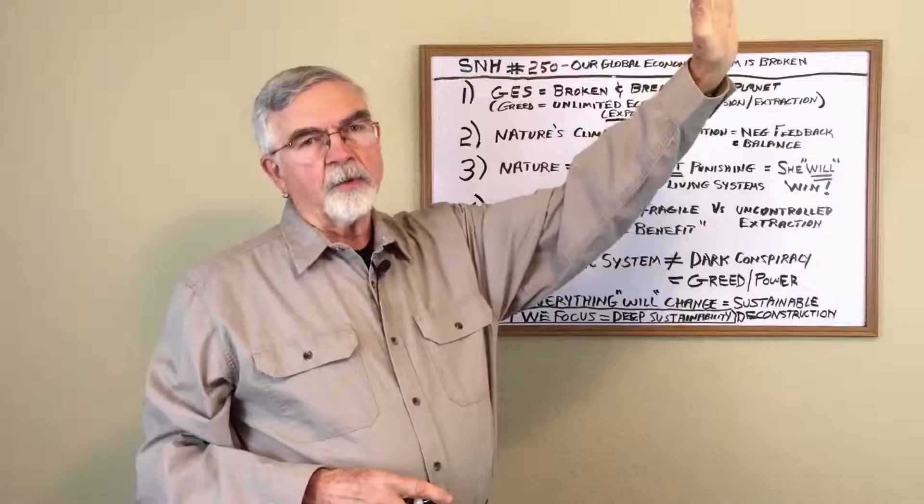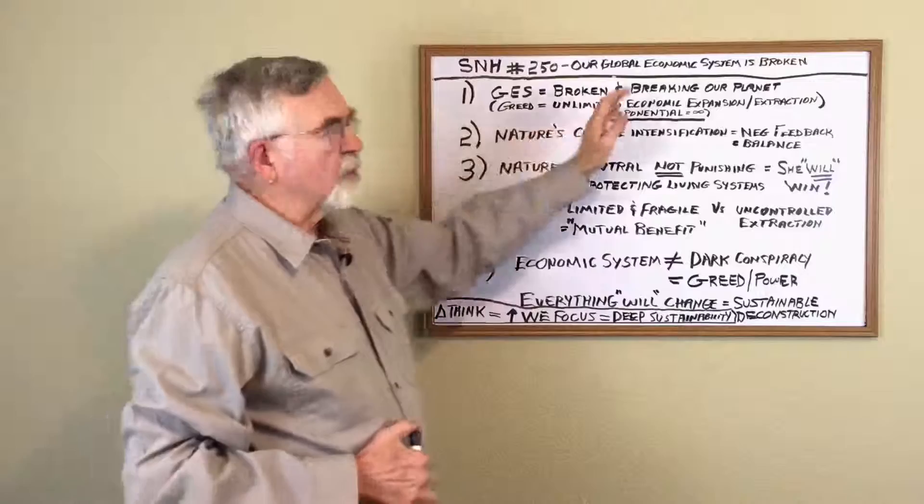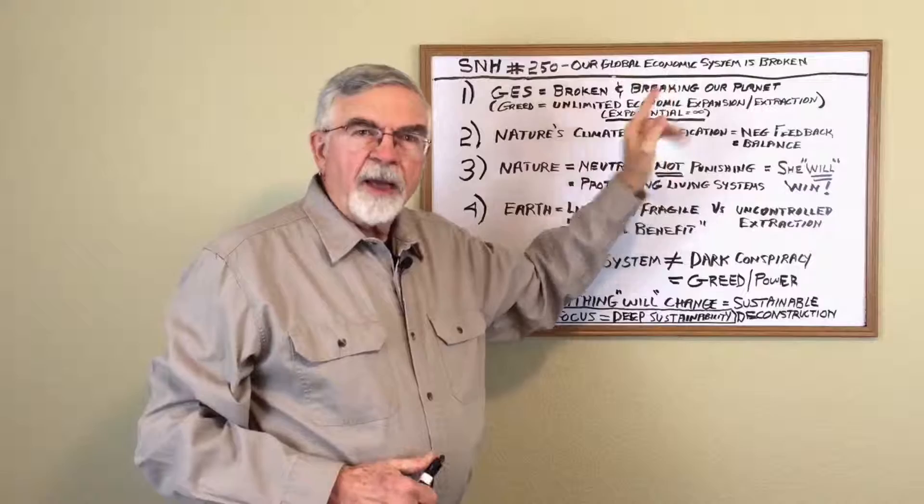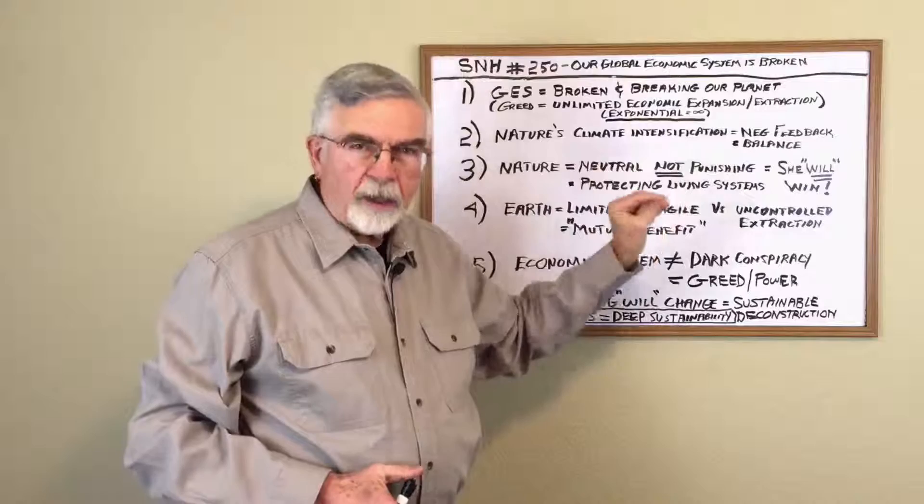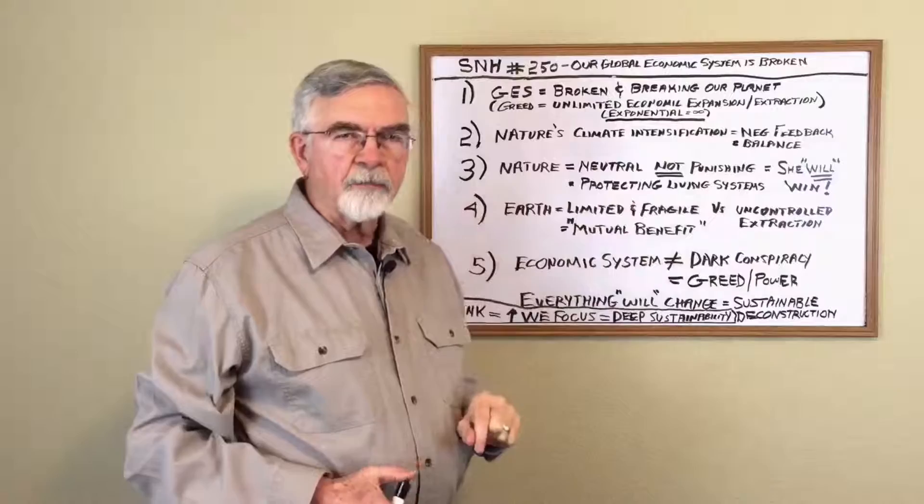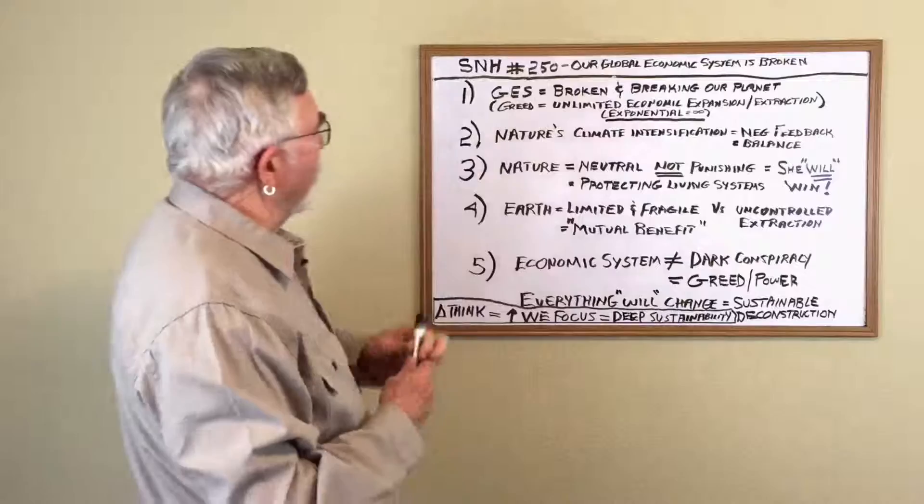So when I say the system is broken, it would work at some level if there was effective feedback systems. Unfortunately, we're deregulating the system, not regulating. And we should be increasing the regulation because that's negative feedback on the system. That's why I say the economic system is broken.